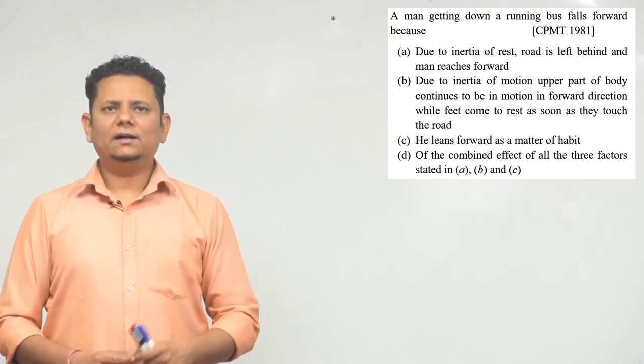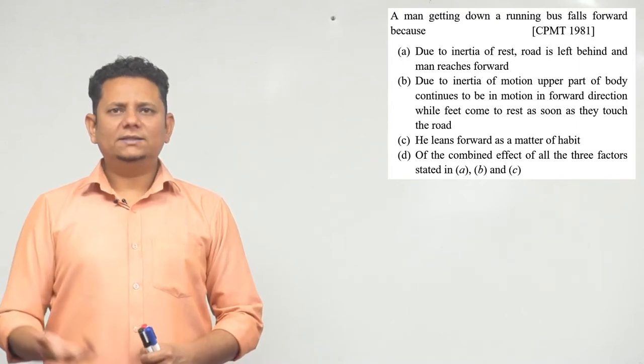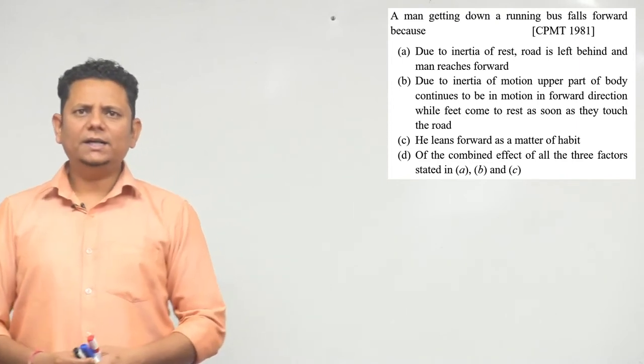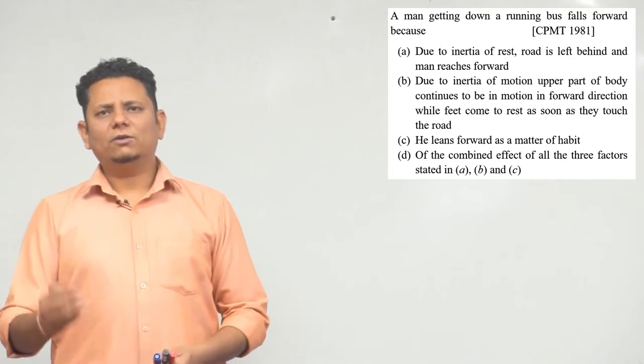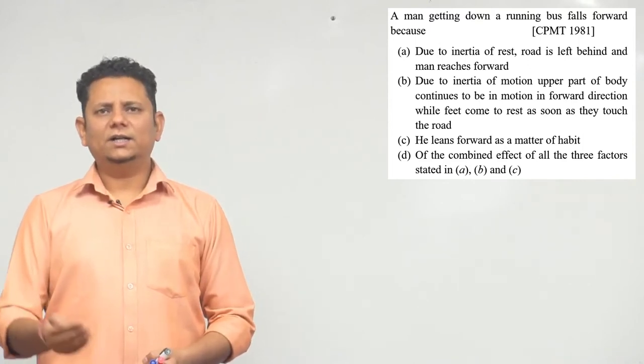Option number C is he leans forward as a matter of habit. Option number D is of the combined effect of all three factors as stated in A, B and C.